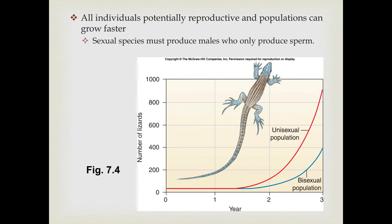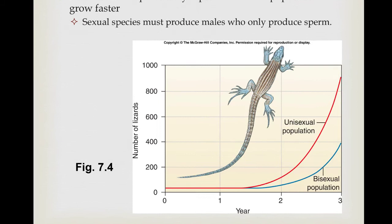In asexual reproduction, all individuals are potentially reproductive, so the population can grow faster. In sexual species, males contribute sperm to females, but only females produce the eggs that develop into offspring. Comparing a unisexual population to a bisexual population, the unisexual population can grow much faster, as demonstrated in a study of whiptail lizards — some populations are asexual, all-female populations that reproduce asexually and grow much faster than bisexual populations from a small starting size.